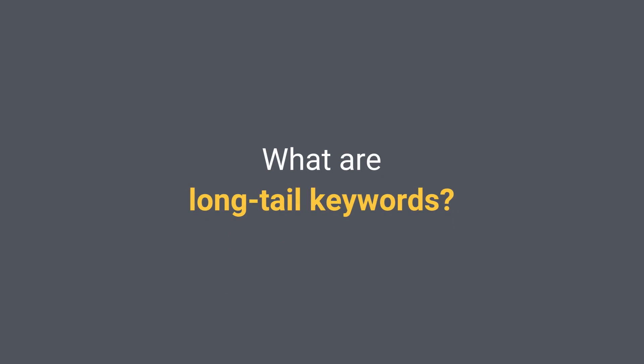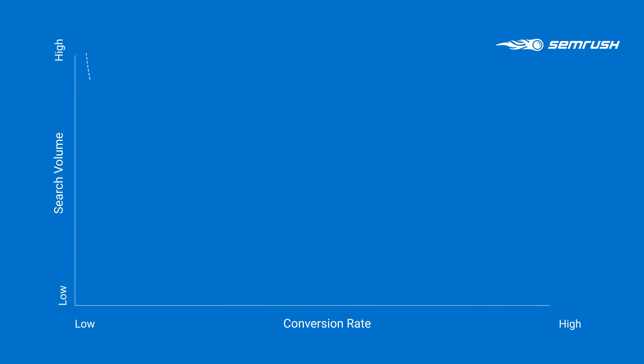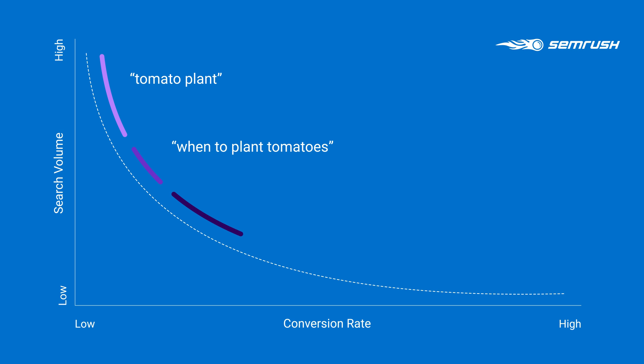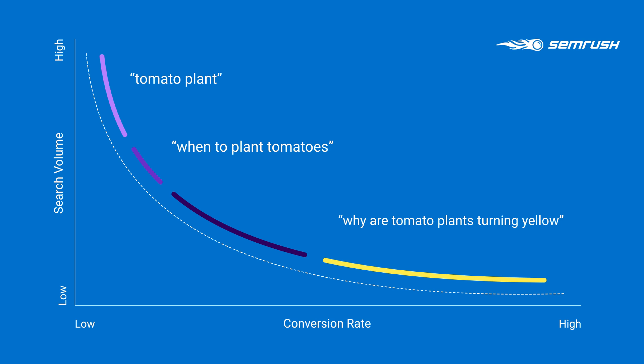So what are long tail keywords? They take their name from a graph of Google search results. A few terms which are called the head of the graph are searched frequently — like in this example, 'tomato plant.' The majority of the searches, which are the tail of the graph, are the longer keywords like 'why are my tomato plants turning yellow,' and they answer much more specifically to the search intent of the user.